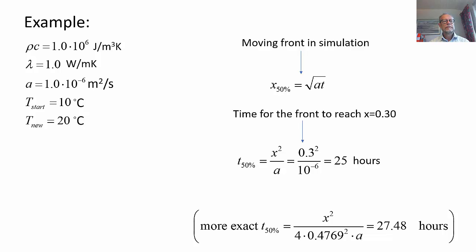An example here: ρc is 10^6, λ value 1, the thermal diffusivity 10^-6, starting temperature 10, the new temperature 20 degrees. We know that the moving front in the simulation is like square root of at. The time it takes for the front to reach 0.3 meters into the material, using the formula is around 25 hours, more exactly at 27.48 hours, but roughly 25 hours.